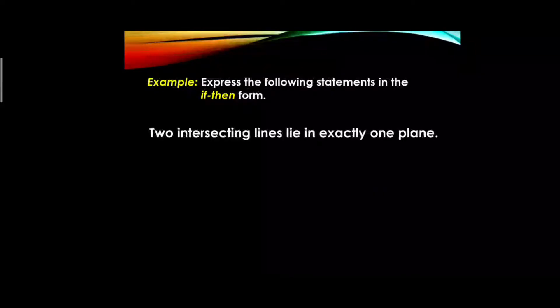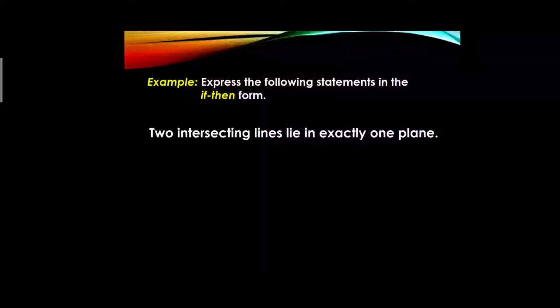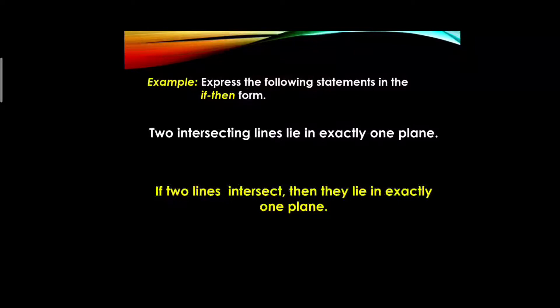For the second statement — 'two intersecting lines lie in exactly one plane' — the subject is two intersecting lines. So we have: 'If two lines intersect, then they lie in exactly one plane.' Note that we need not copy every word exactly — the third point to remember is that we may change the form of words to make the sentence grammatically correct.